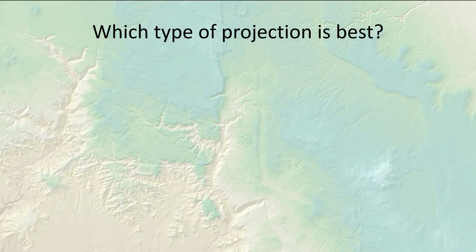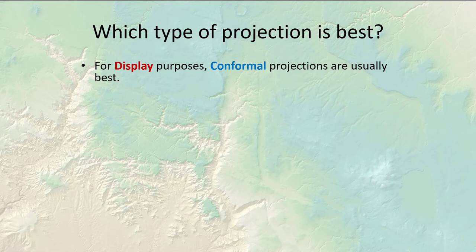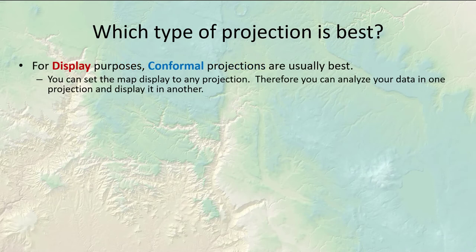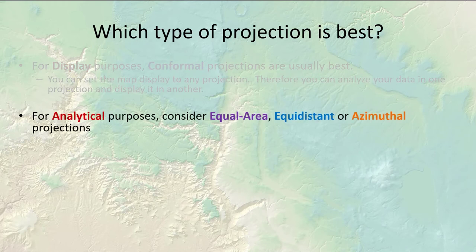So which projection do you use when starting your analysis? It all depends on what you're trying to do. If you're making a pretty map, conformal projections are usually what you go with. You can set the map display to any coordinate system, so you can analyze data in one projection and display it in another — you always have that flexibility. For analytical purposes, like calculating the size of a stand or the distance of a road, you'll probably want equal area, equidistant, or azimuthal projections.